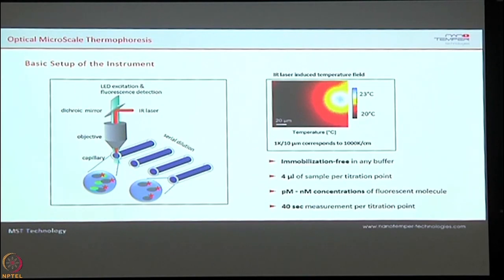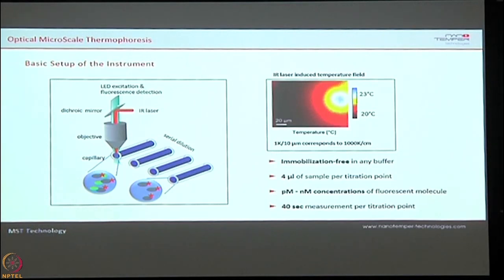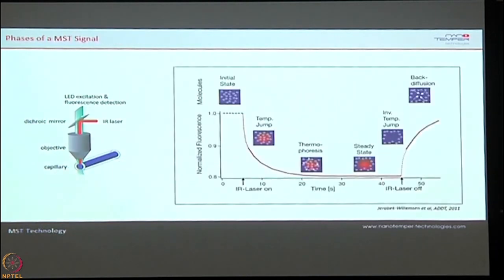In 12 to 15 minutes you can determine the binding affinity without any compatibility issues with buffers — no cross talk, no buffer interferences. The temperature gradient created is very steep: 20 to 23 degrees, which does not affect any of your molecules. You fix one partner and titrate the second one at different dilutions, irradiate with the laser, and see how the biomolecules move upon interaction versus when they are not interacting.